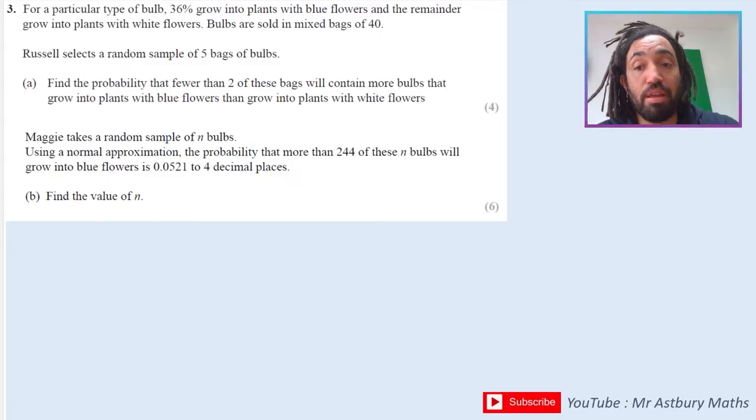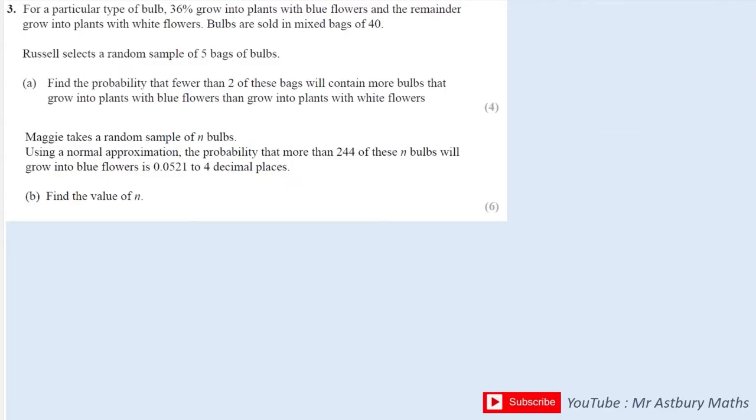We have a particular type of bulb. 36% grow into plants with blue flowers and the remainder grow into plants with white flowers. Bulbs are sold in a mixed bag of 40. He selects five bags. Find the probability that fewer than two of these bags will contain more bulbs that grow into blue than grow into white.